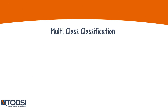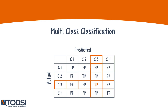We can extend these concepts to classification problems with more than two classes. Here is what the confusion matrix might look like for multi-class classification. The definitions for precision and recall remain the same as in the two-class case. The difference is that a data point can now be misclassified in multiple ways, so false positives and false negatives must be summed over all possible misclassification pairs. Precision is the ratio of true positives over all points classified as positive, and recall is the ratio of true positives over the total number of positives.